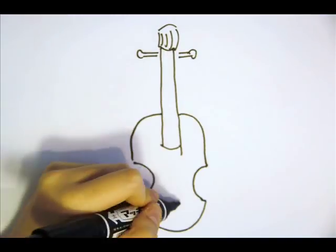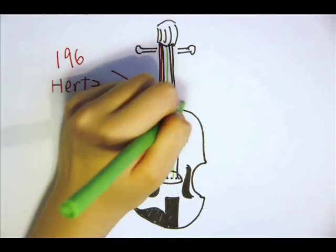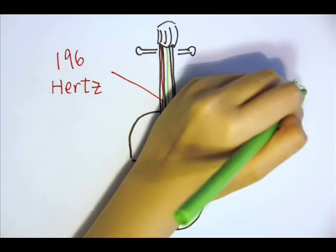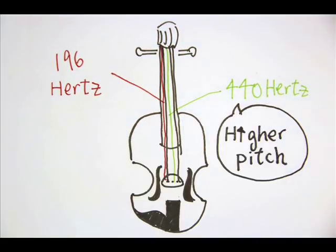For example, when plucked, a violin string vibrates 196 times per second, so the frequency of the sound produced is 196 hertz. If the frequency of the sound produced by another string is 440 hertz, then the pitch of the string is higher.